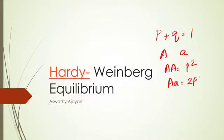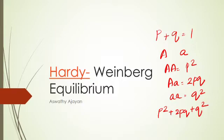In this equation, p² represents the homozygous dominant character, 2pq represents the heterozygous character, and q² represents the homozygous recessive character. So p² + 2pq + q² is equal to 1.